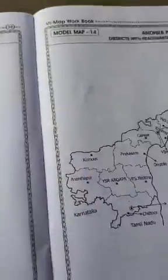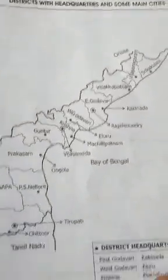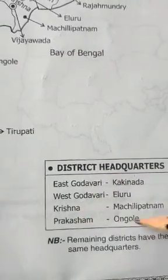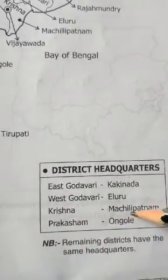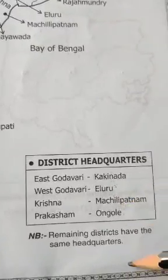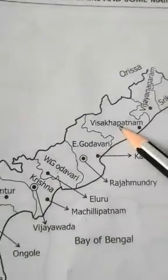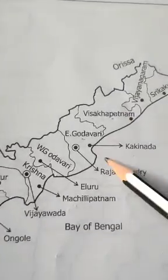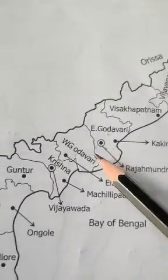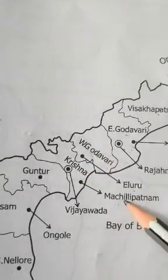So these are the districts and their locations and headquarters. Keep this in mind: East Godavari — Kakinada; West Godavari — Eluru; Krishna — Machilipatnam; Prakasam — Ongole. These four only are having different names. Remaining all districts have the same headquarters — Srikakulam means Srikakulam, Vijayanagaram means Vijayanagaram, Visakapatnam means Visakapatnam. East Godavari's location is here — Kakinada. And Rajahmundry, the main city, is also located here. West Godavari headquarter — Eluru. Krishna district — Machilipatnam.